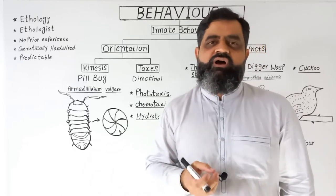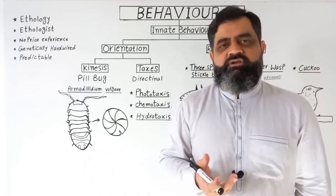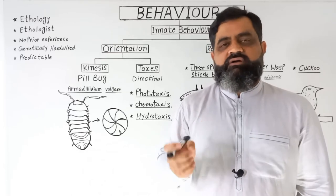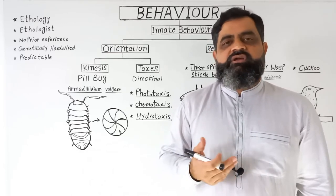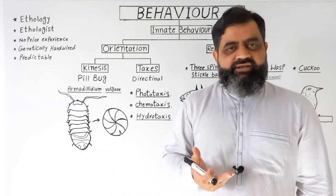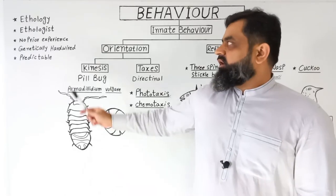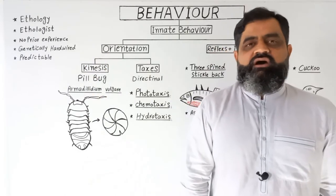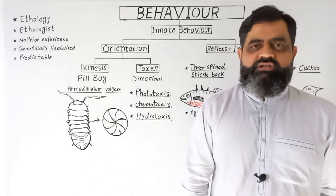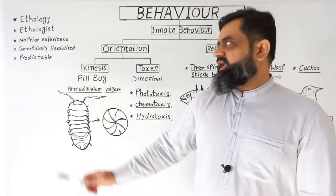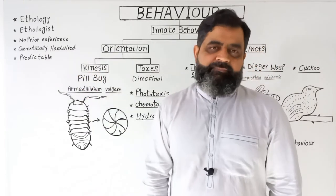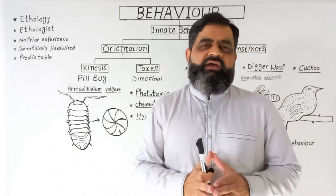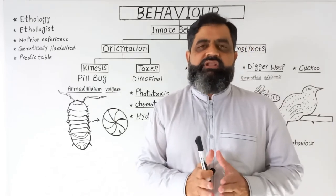All organisms of the same group will behave in the same manner. For example, a snake will always bite a person and a scorpion will always sting a person whenever it is threatened. These behaviors are genetically hardwired in all organisms and are usually predictable.